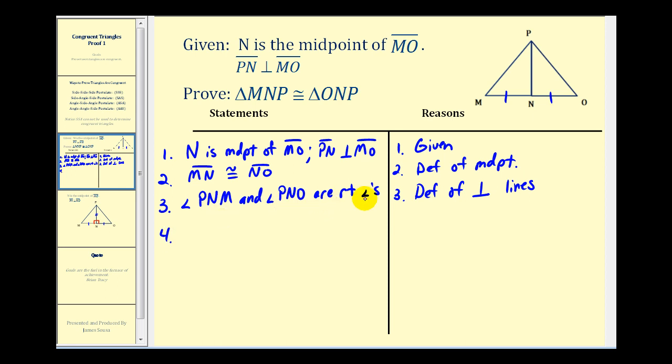Then because both of these angles are right angles, we know they're congruent to one another. The reason for this is that all right angles are congruent.